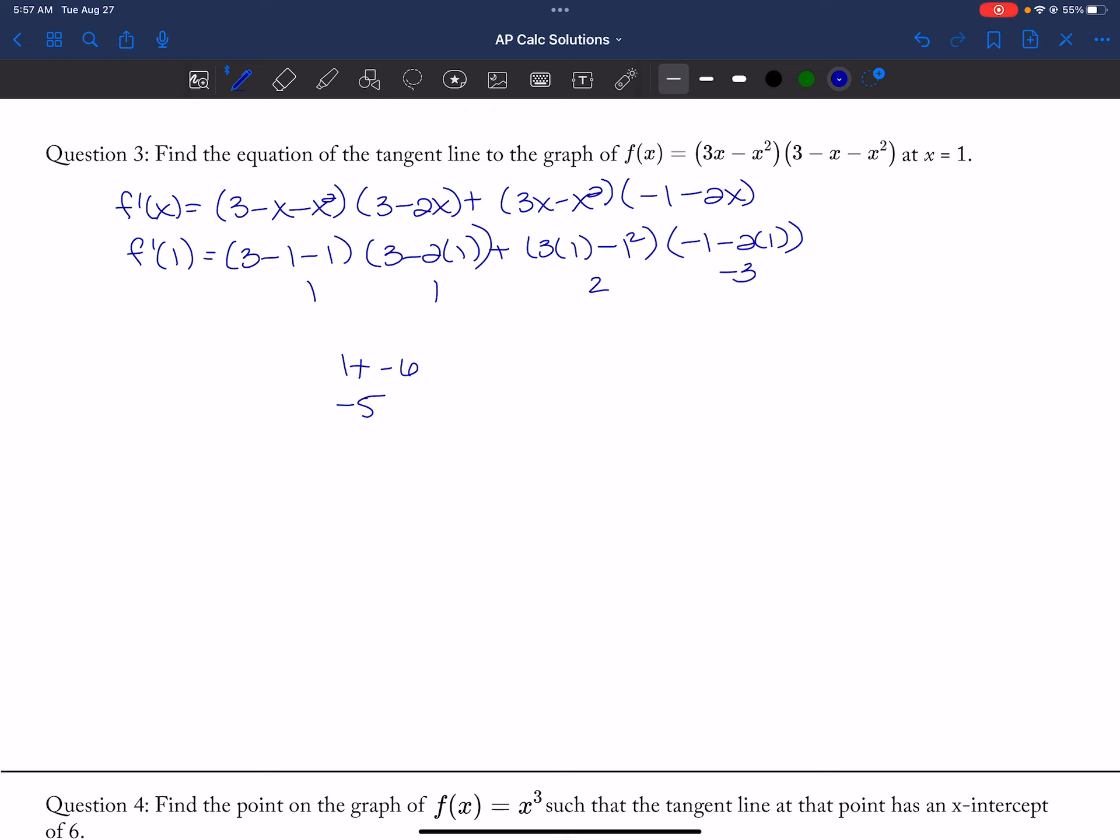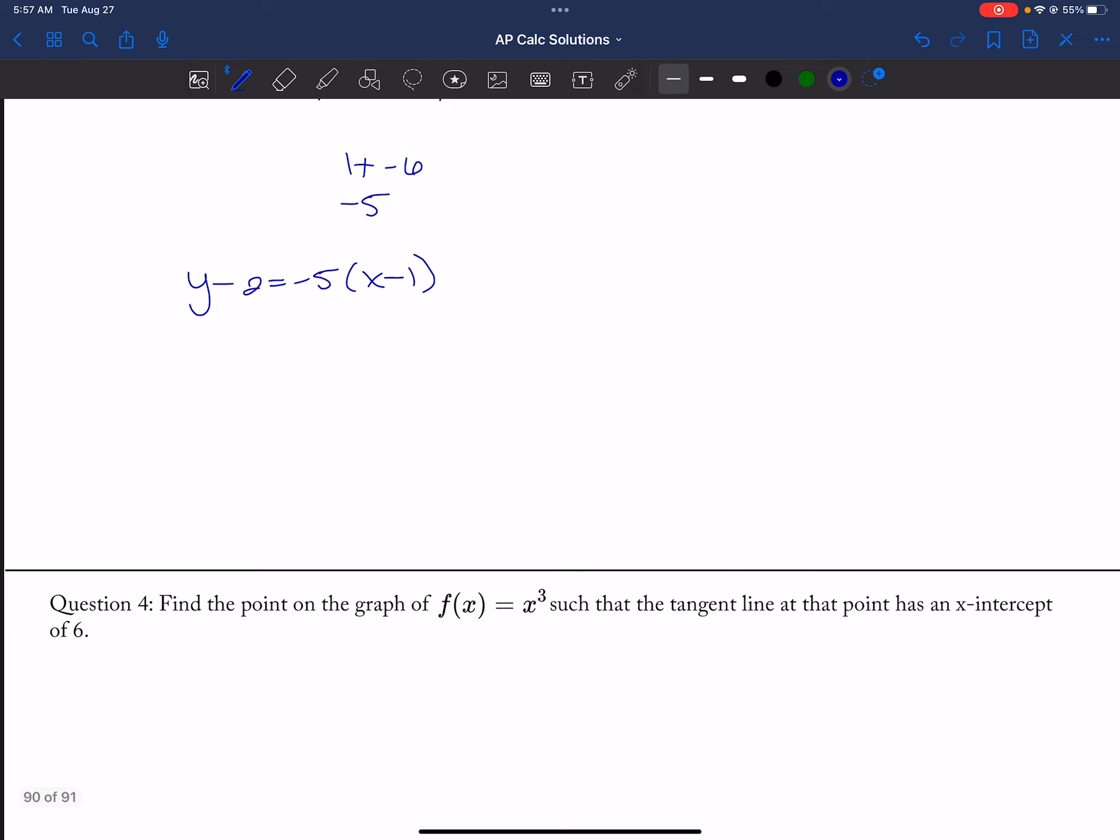So this is a negative 5. So then I need x of 1, so that's 3 minus 1, minus 1, so this is 2. So my tangent is y minus 2 is equal to negative 5 times x minus 1.